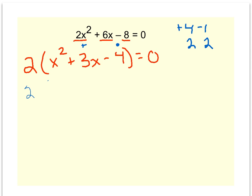So I continue on with my two parentheses. Don't forget to bring down the 2 and the equals 0. I'll split up my x. I'll put the plus 4 in one parenthesis, the minus 1 in the other.